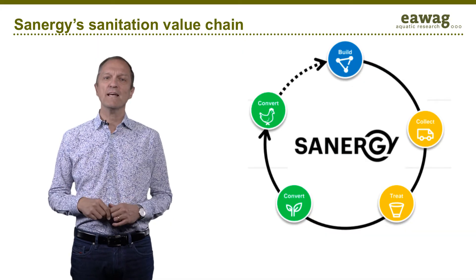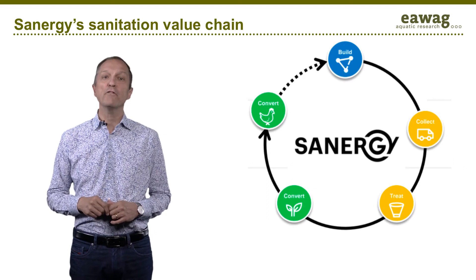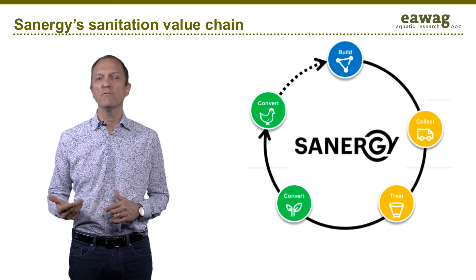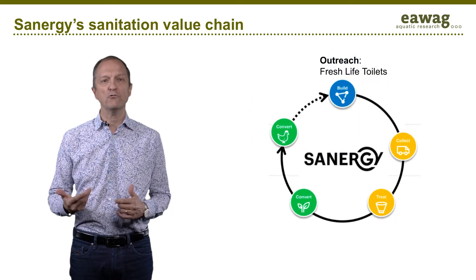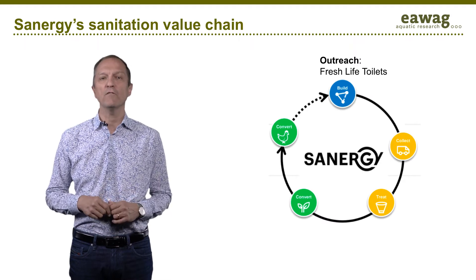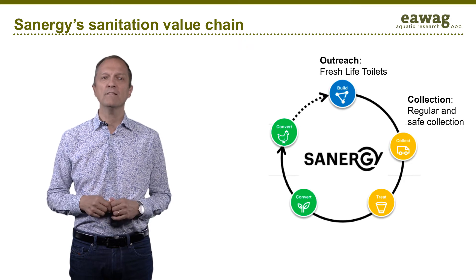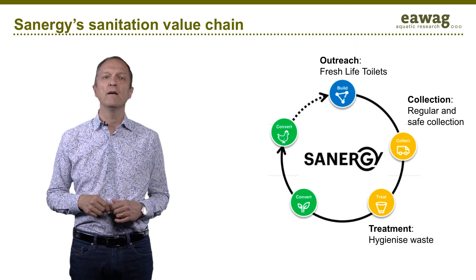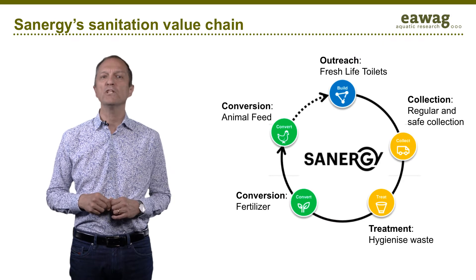Let's take a look at Sanergy's sanitation value chain. Sanergy has developed the Fresh Life Toilet — a source-separating squat pan toilet that separates urine from feces. The steps of the sanitation value chain are: outreach, marketing the Fresh Life Toilet as an aspirational and affordable toilet, collection of feces and urine on a daily basis, the transport of waste to the treatment plant, and finally the conversion of the waste into fertilizer and a protein-rich animal feed.